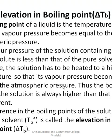Therefore, the solution has to be heated to a higher temperature so that its vapor pressure becomes equal to atmospheric pressure. That is what we call the boiling point. Thus, the boiling point of the solution is always higher than that of the pure solvent. The difference in boiling point between the solution (Tb) and the pure solvent (T⁰b) is called elevation in boiling point, represented as ΔTb. So ΔTb = Tb − T⁰b — the difference in boiling point temperature between the solution and the pure solvent.